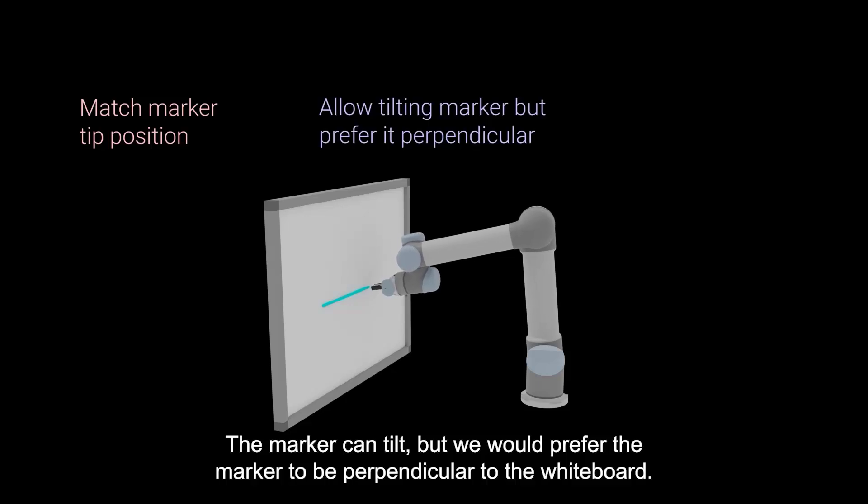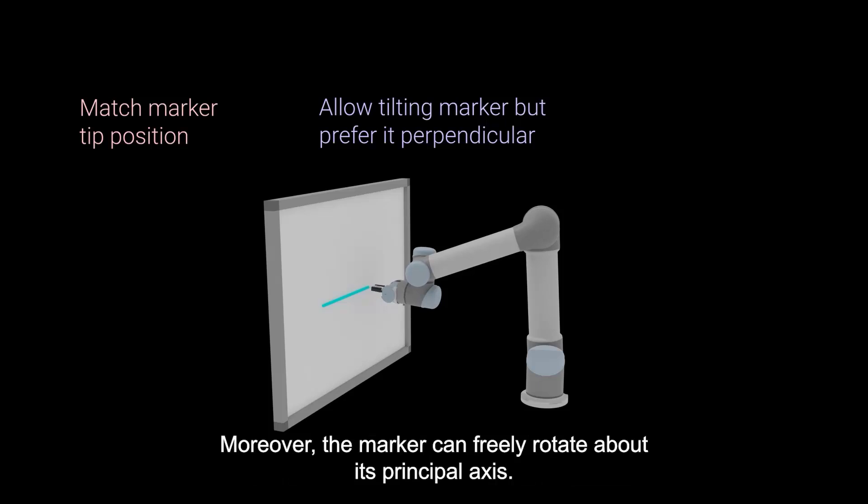The marker can tilt, but we would prefer the marker to be perpendicular to the whiteboard. Moreover, the marker can freely rotate about its principal axis.